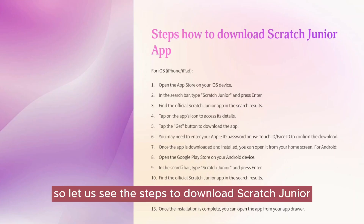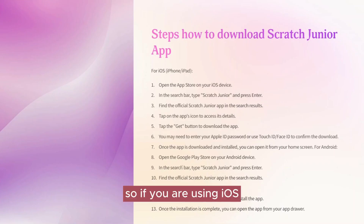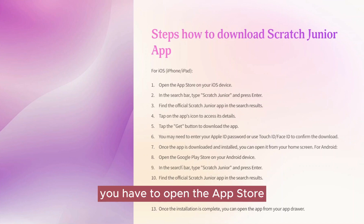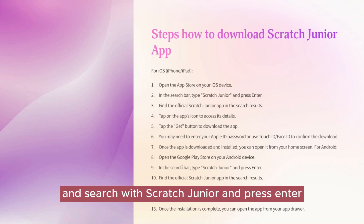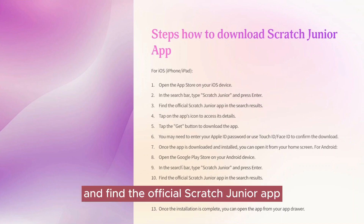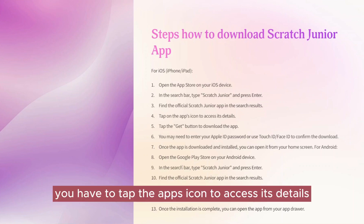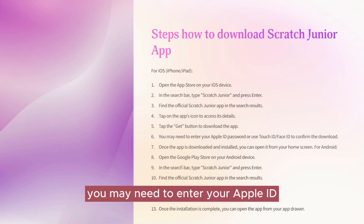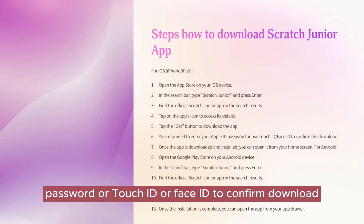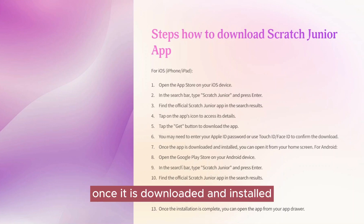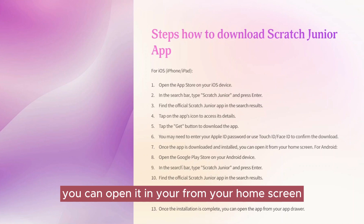Let us see the steps to download ScratchJunior. If you are using iOS, iPad, or iPhone, you have to open the App Store and search for ScratchJunior, press enter, and find the official ScratchJunior app in the search results. Tap the app's icon to access its details, then tap the Get button to download the app. You may need to enter your Apple ID, password, Touch ID, or Face ID to confirm the download. Once it is downloaded and installed, you can open it from your home screen.